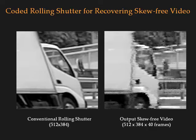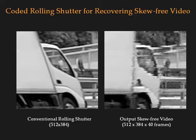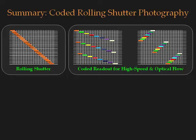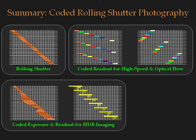Removing these artifacts will be the subject of future research. In summary, in this paper we proposed coded rolling shutter for CMOS image sensors. We have demonstrated how to use coded readout for high-speed photography and optical flow-based applications, and how to use coded exposure and readout for practical high dynamic range imaging. We also present some preliminary results for recovering space-time volume from a single image.